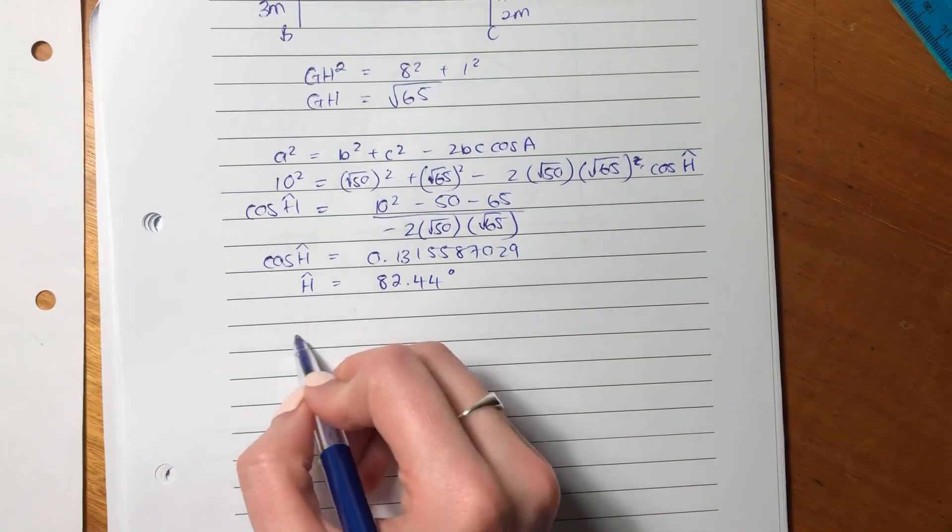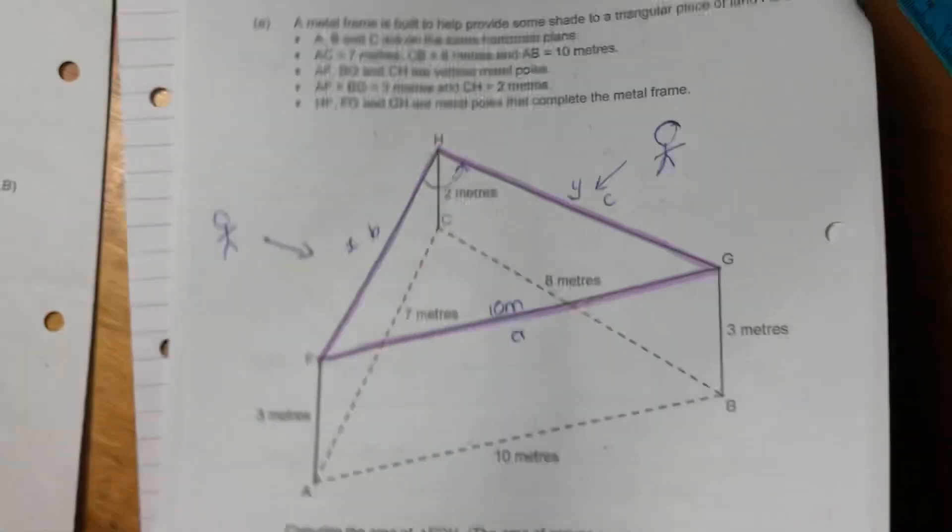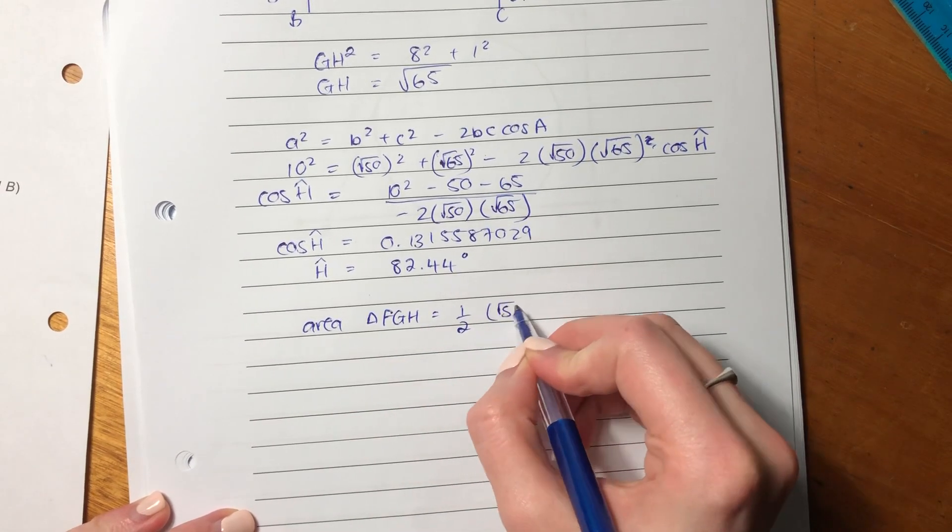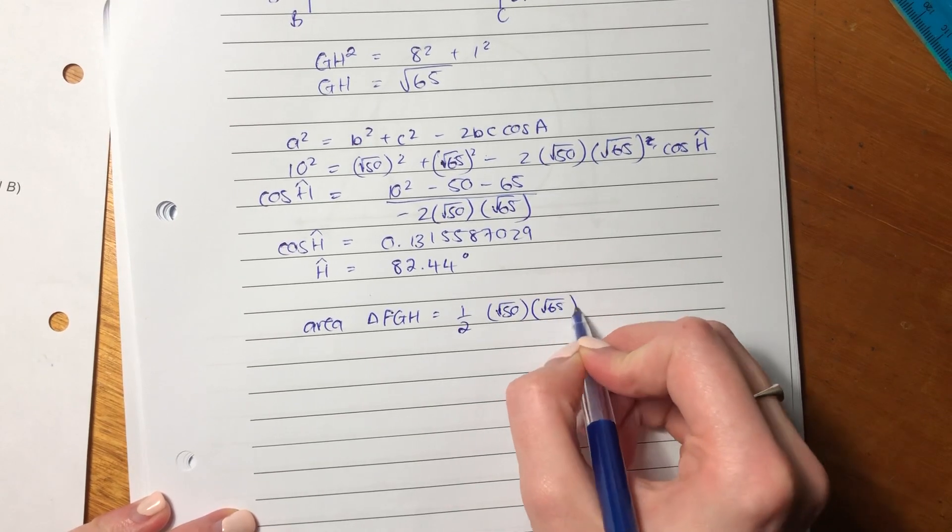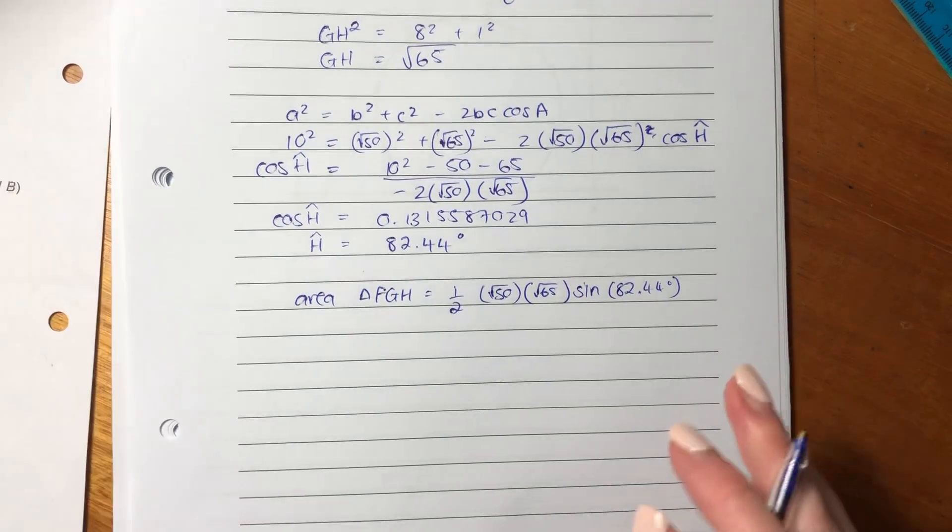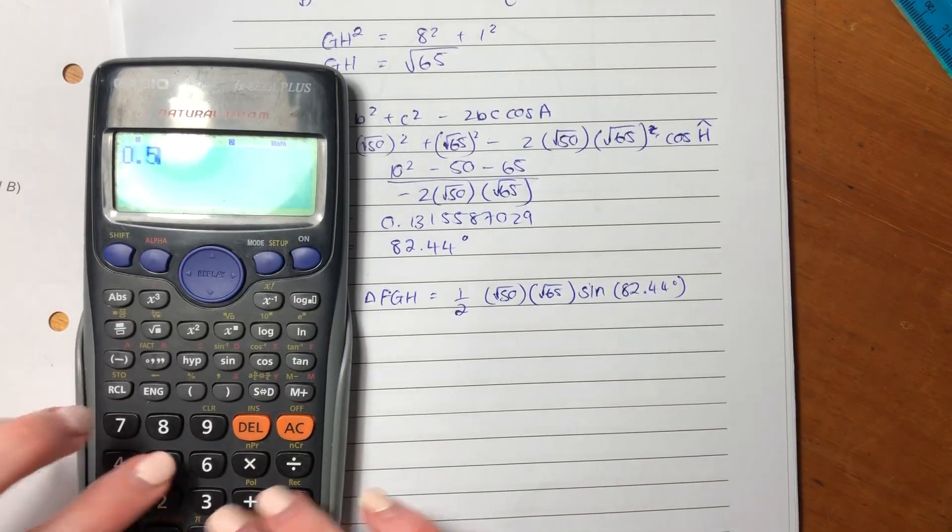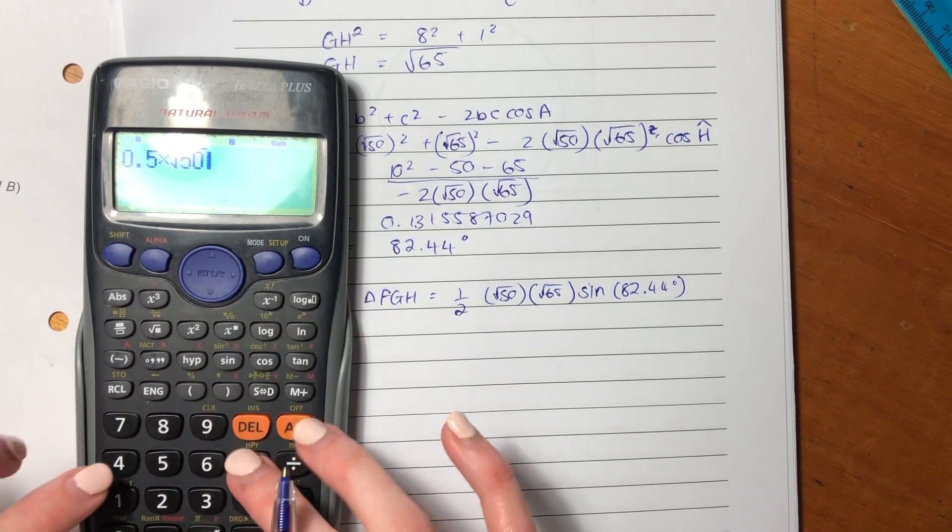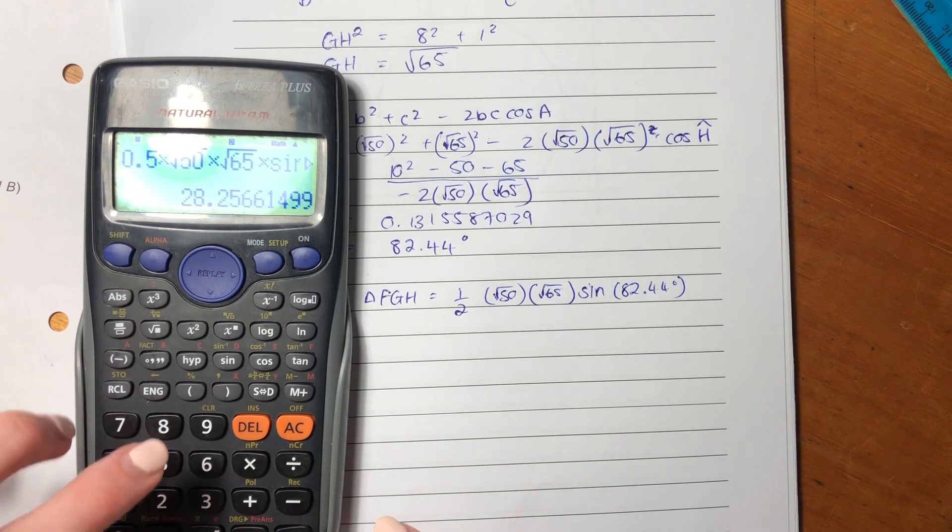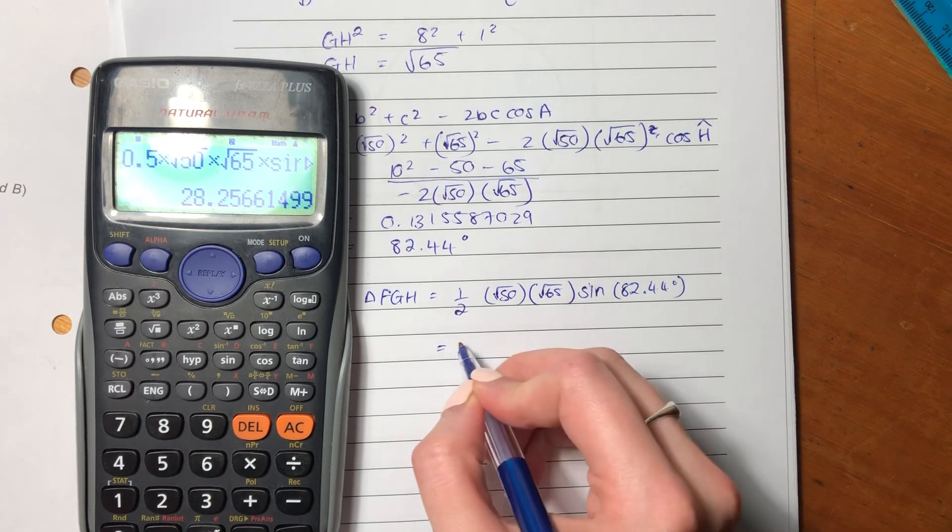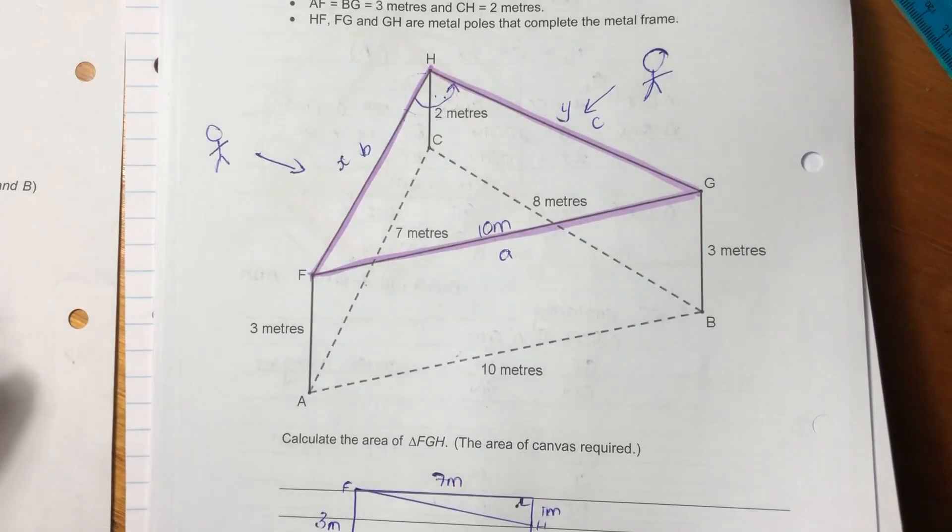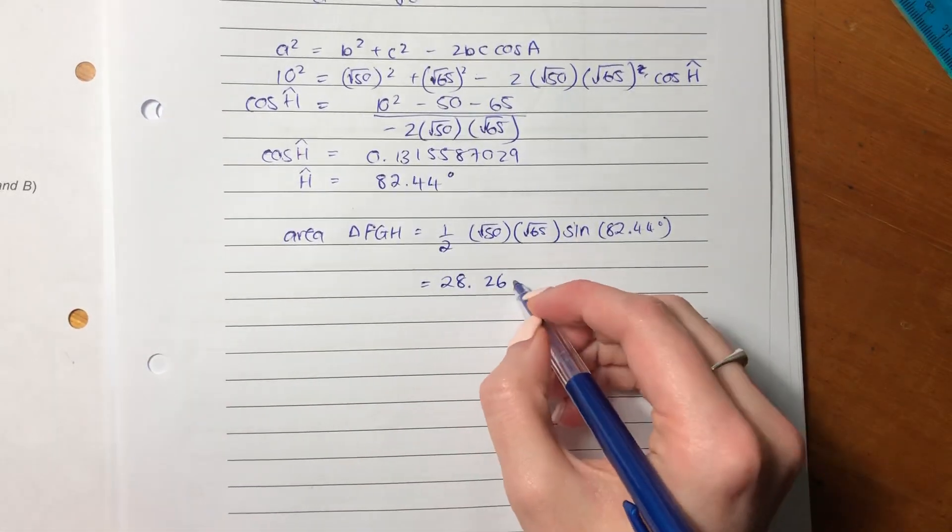So now we've got our two sides that we wanted and we've got our angle. So now we can work out the area. So now we say the area of triangle FGH equals half times square root 50 times square root 65 times sine 82.44 degrees. So let us put this into our calculator. So I'm getting my area as 28.26. Did they tell us what to round it off to? They didn't tell us what to round it off to. So we can just leave it like this. And remember, it's meter squared. We're talking about area.